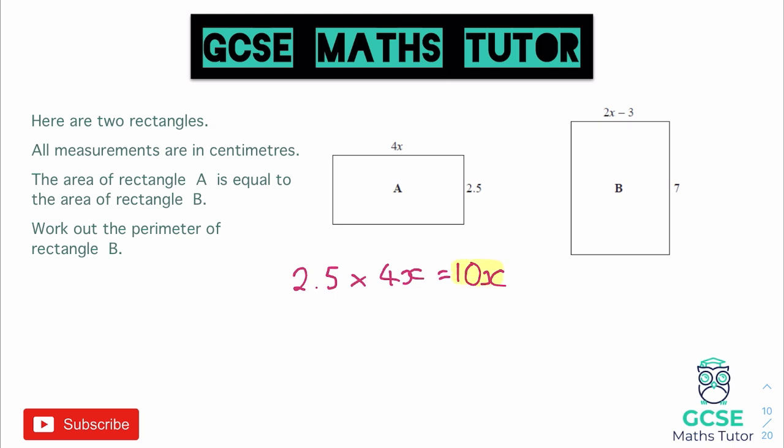Moving on to rectangle B, we're going to do the same thing. We have 2X minus 3, and we're going to multiply that by the 7.